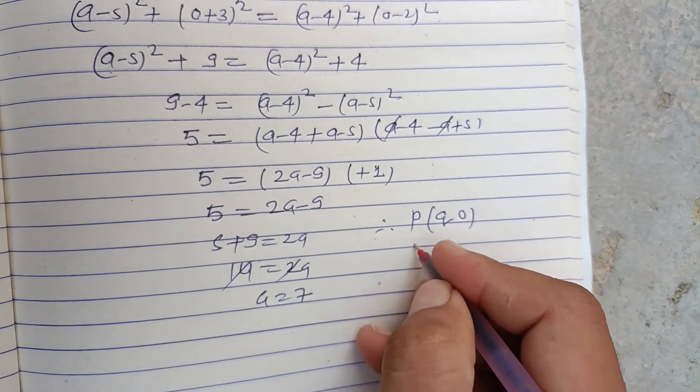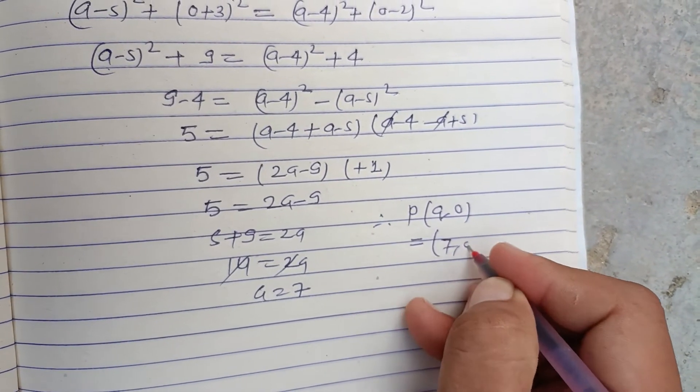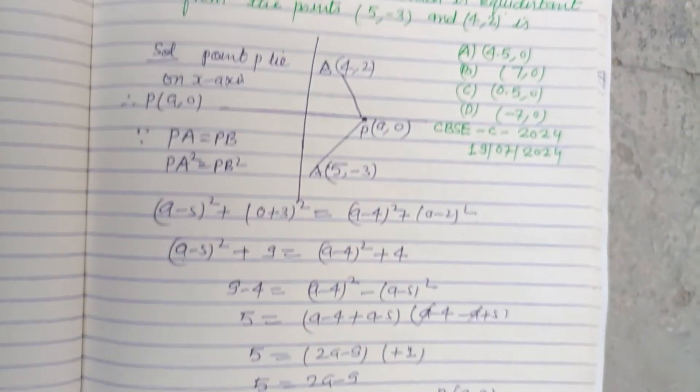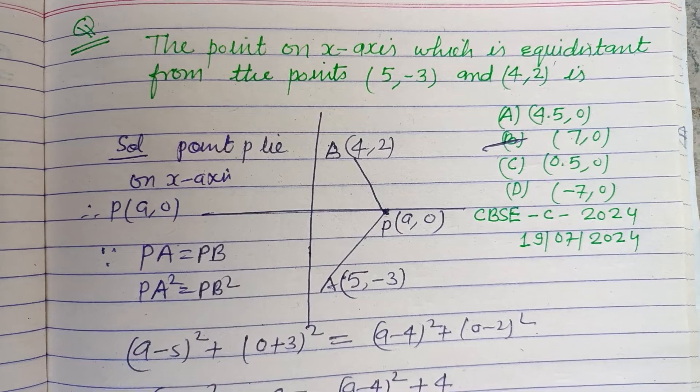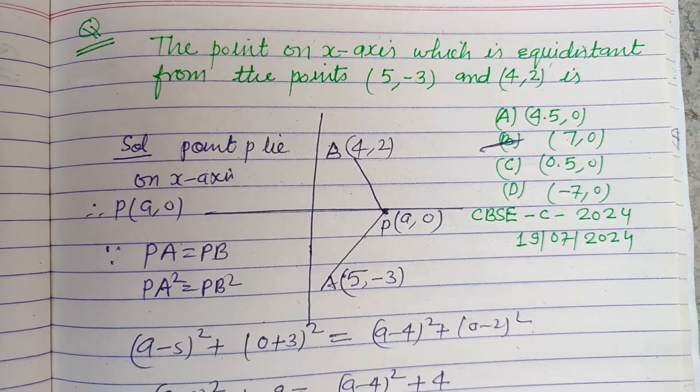(7,0) is the correct answer, which is option B. I hope you got it. Please like the video, subscribe to the channel. Thanks for watching.